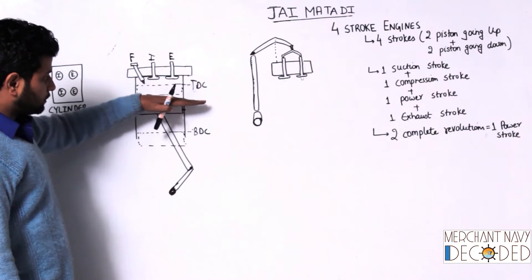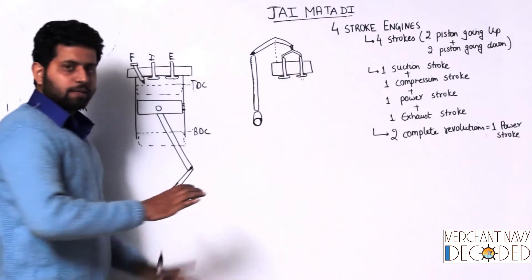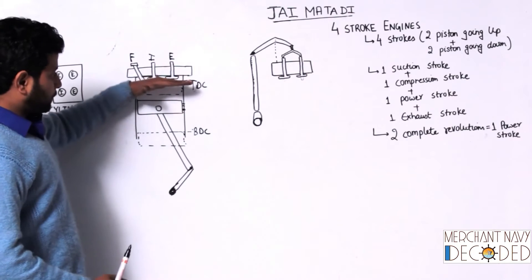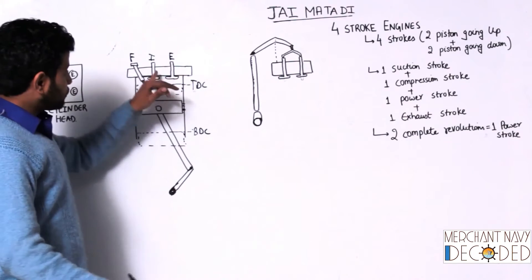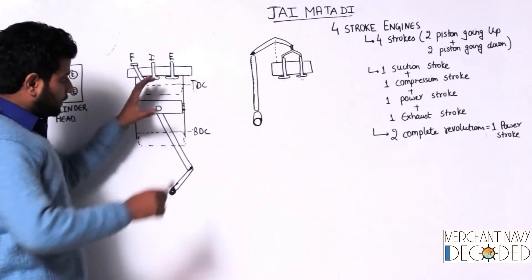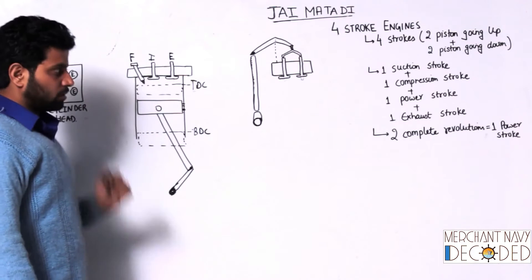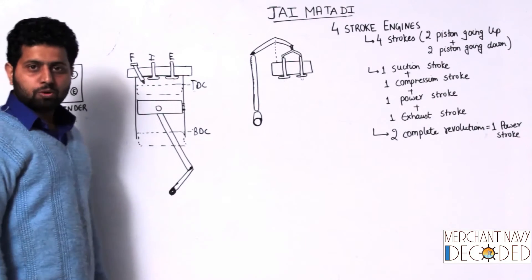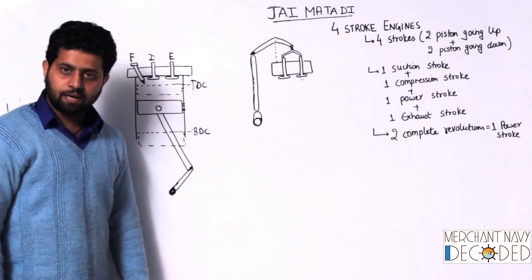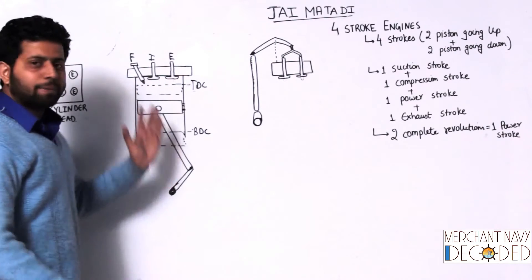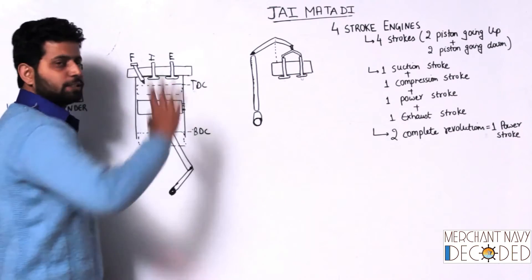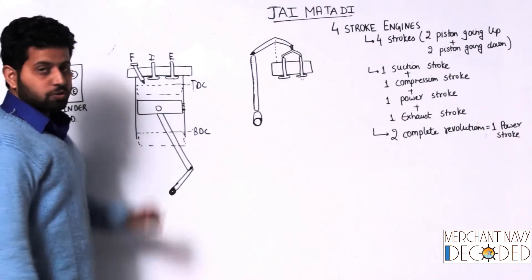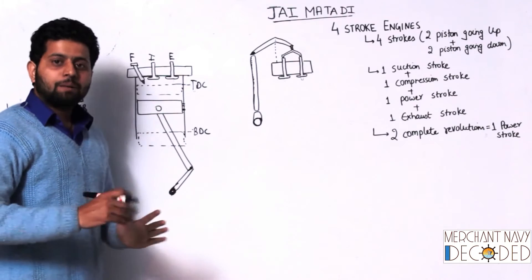So your suction valve opens. When the piston starts coming down, you need fresh air inside, so this inlet valve opens and air comes into the combustion chamber. Now the piston starts moving up in the compression stroke. The inlet valve also closes and the exhaust valve also closes. Why? Because if both the valves are not closed, compression will never take place — air will release from there. When the piston reaches the bottom, inlet valve shuts, exhaust valve is already shut, and when the piston starts going up, compression takes place.